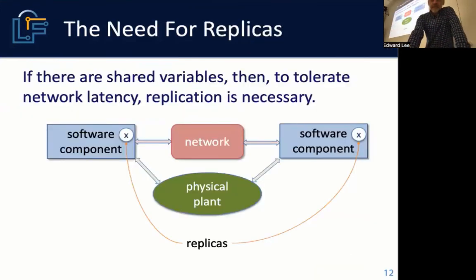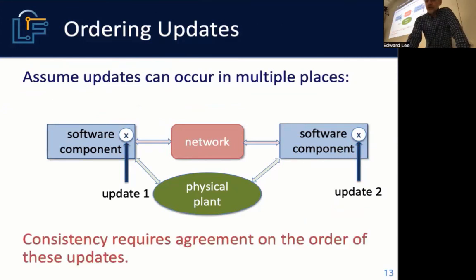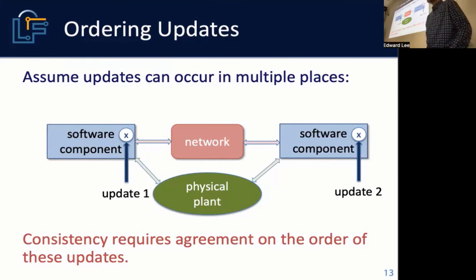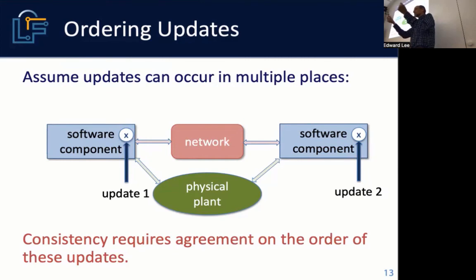Stepping back: you need replicated data whenever you want any kind of availability across a distributed system, and you need to assume that updates can occur in multiple places. Consistency simply requires agreement on the order of these updates. Agreement is not that two components agree at a certain Newtonian physical time on the value of a variable — because that's impossible. This requirement is much looser: they agree on the order in which the updates occur.